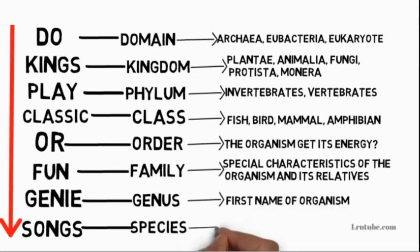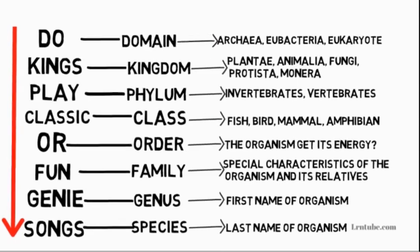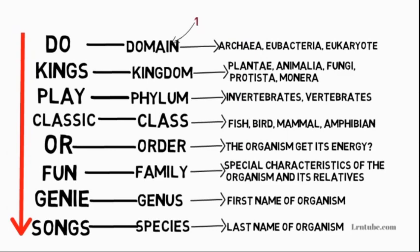A fun fact: domain is the broadest category, while species is the most specific category available. The taxon domain was introduced in 1990 by Carl Woese.